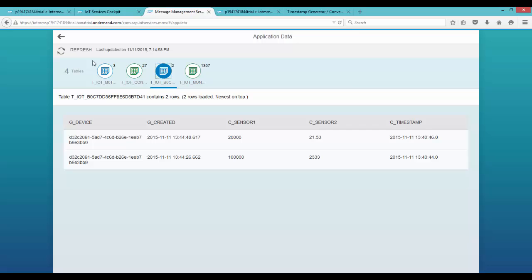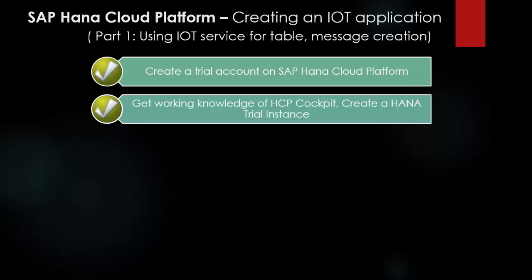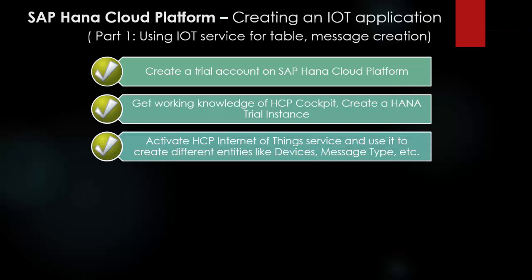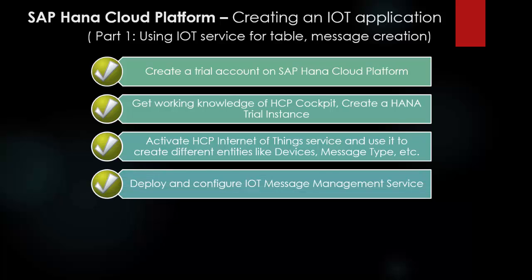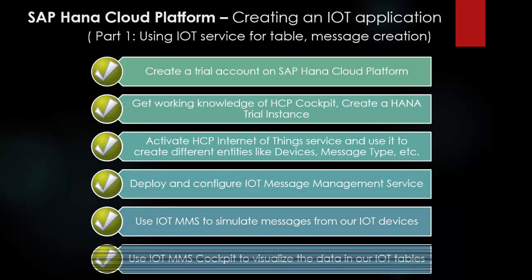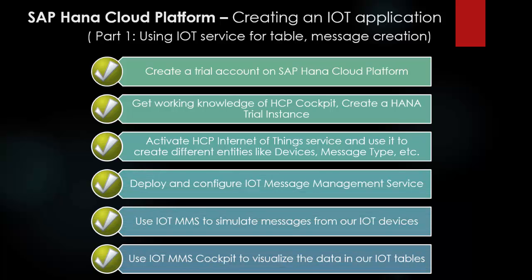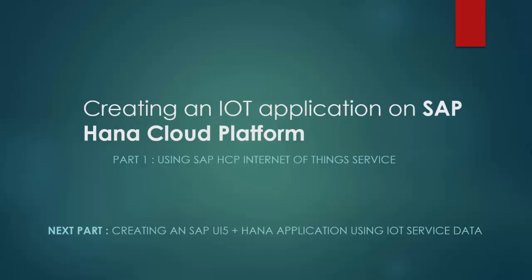And we'll look at how to do that in our next session. So in this session we created a HANA trial account, configured and used the IoT services to model our IoT database, and then used the MMS service to send some message values and simulate our IoT devices. In the next session we'll look at how to create a UI5 and HANA application on top of our IoT database. Thank you for watching.